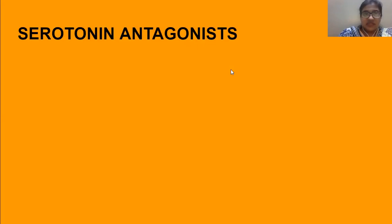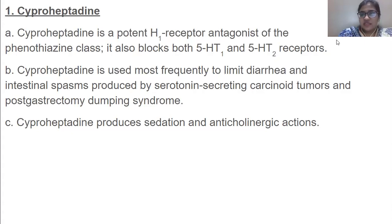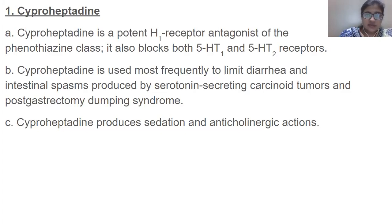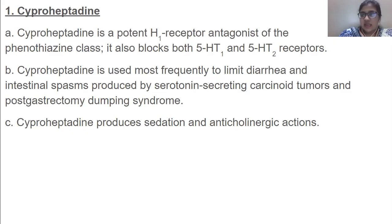Moving to antagonist drugs, the first class is cyproheptadine. Cyproheptadine is a potent H1 receptor — histamine-1 receptor — antagonist of the phenothiazine class. It also blocks both 5-HT1 and 5-HT2 receptors. It is used frequently to limit diarrhea and intestinal spasm produced by serotonin-secreting carcinoid tumors and post-gastrectomy dumping syndrome.